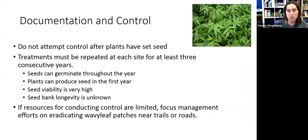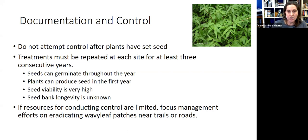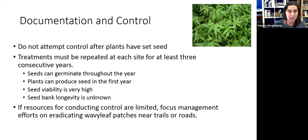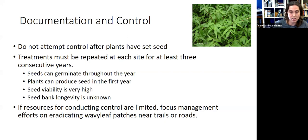What do you do about wavy leaf? Don't attempt to control it after the plants have set seed — if it's sticky, just stay out of it or you'll just spread it. Treatments have to be repeated at each site for at least three years. Seeds can germinate throughout the year, so if you treat it early in spring you'll get new germinants throughout the summer. Plants can produce seed in the very first year. Seed germination is really high, but we don't know how long seed remains viable in the soil. If conducting control with limited resources, focus on areas where people are most likely to pick this up: edges of trails, edges of roads, near parking lots.